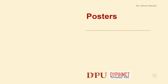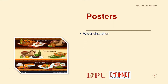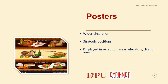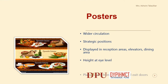The second type of Menu Merchandising Tool is the Poster. It is for wider circulation and is usually placed at strategic positions. They are displayed in reception areas, elevators, dining areas, etc. They should always be at eye level and should be placed away from entrance and exit doors.